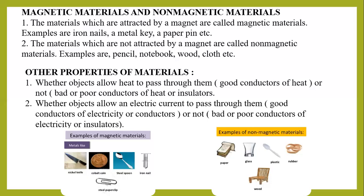There is another property on which materials are classified. Number one: whether objects allow heat to pass through them. If heat can be passed through them, those are called good conductors of heat. Those which do not allow heat to pass through them are called bad or poor conductors of heat, also called insulators. Number two: whether objects allow electric current to pass through them — those are called good conductors of electricity, or conductors. If objects do not allow electric current to pass through them, those materials are called bad conductors of electricity, or insulators.